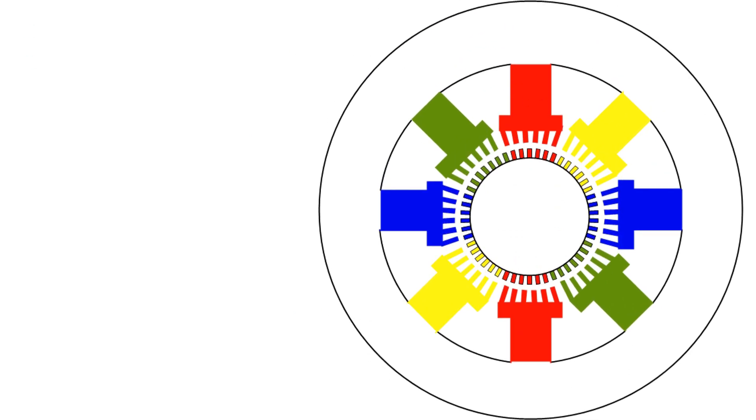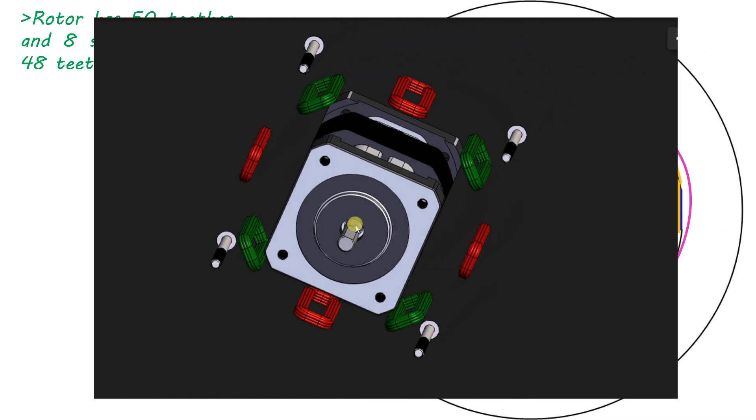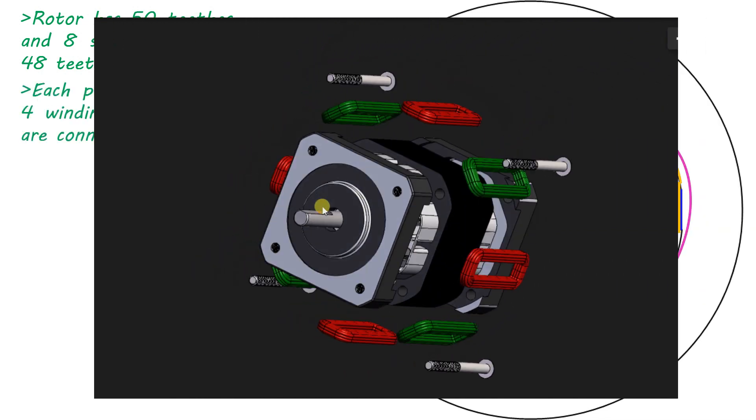Let's take an example where the rotor has 50 teeth and 8 stator poles has 48 teeth. 8 stator poles are energized with 2 phases called phase A and phase B. Each phase will excite 4 windings of coil that are connected in series.